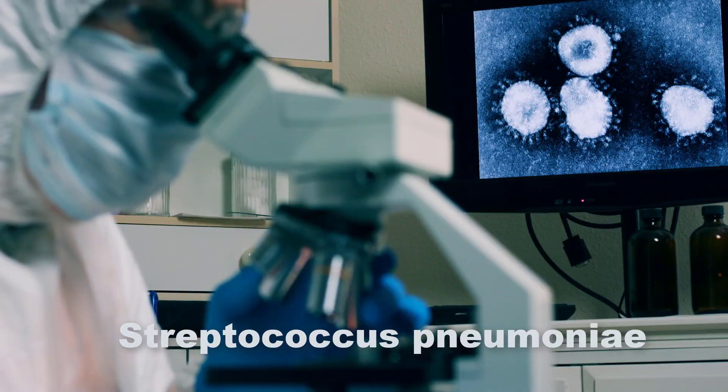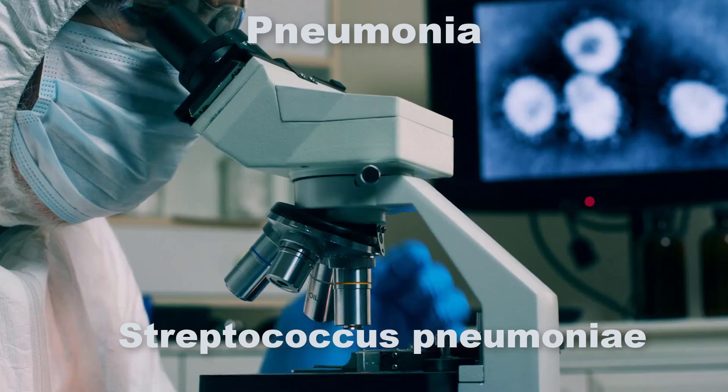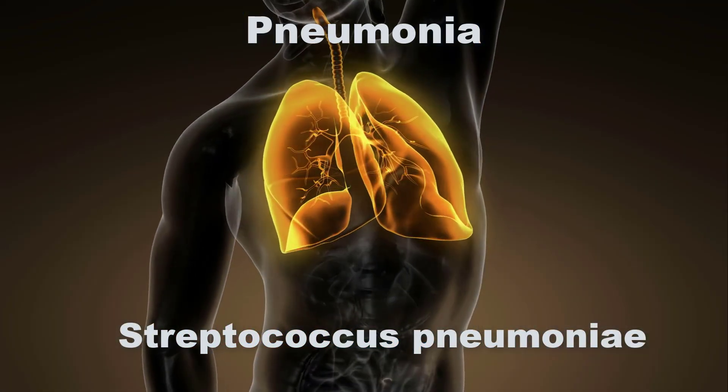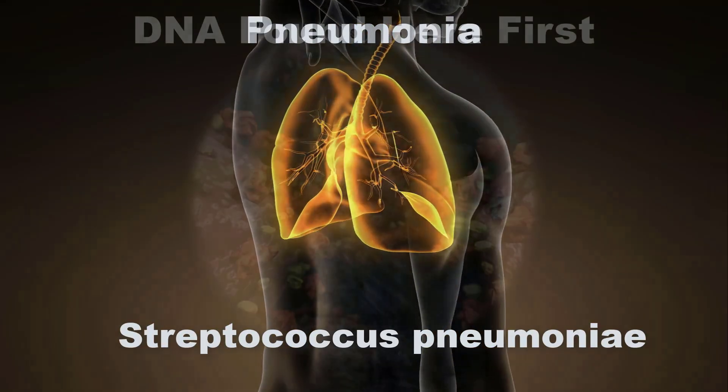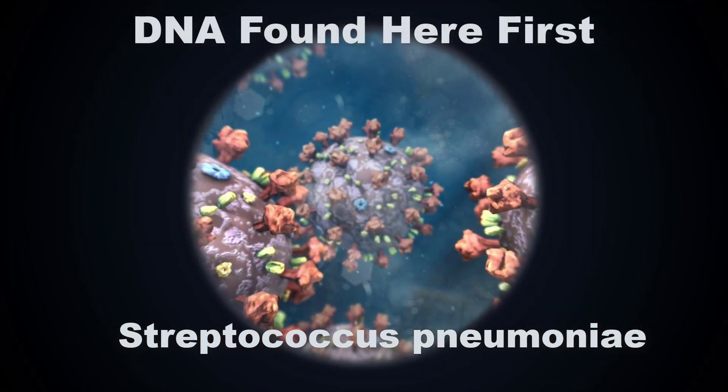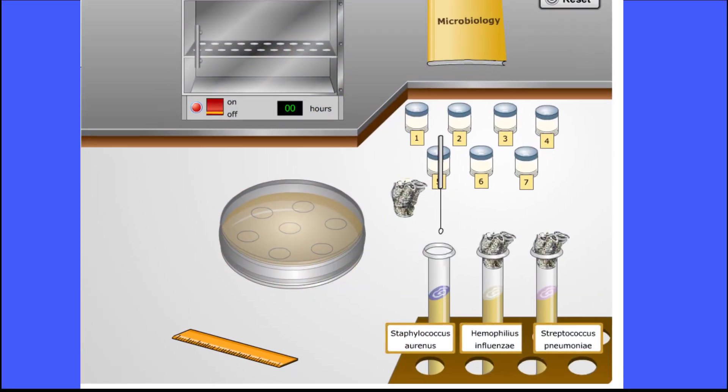Streptococcus pneumoniae causes pneumococcal pneumonia. Streptococcus pneumoniae are spherical cells that are arranged in chains. Interestingly, it was the Streptococcus pneumoniae that was the organism in which DNA was first discovered. Let's start our experiment.